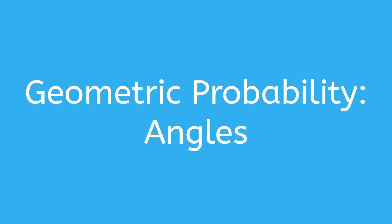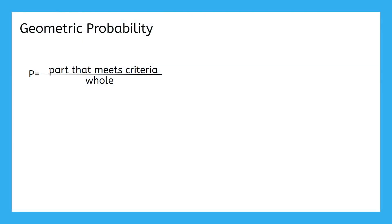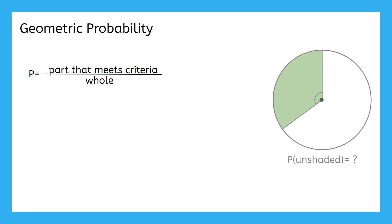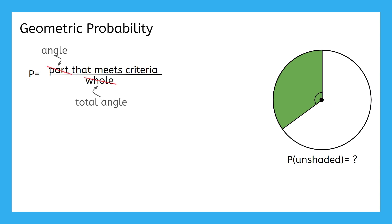Now let's talk about geometric probability involving angles. Here's that geometric probability formula again. We've adapted it to work with area as well as length, but what about a sector on a circle? If we choose a point at random on a circle, how could we find the probability of it being in the unshaded region? We want to figure out what part of the circle's central angle the unshaded sector takes up. Since a circle is divided into 360 degrees, we figure out how many of those 360 degrees the sector's central angle takes up, giving us the angle that meets the criteria over 360 degrees.